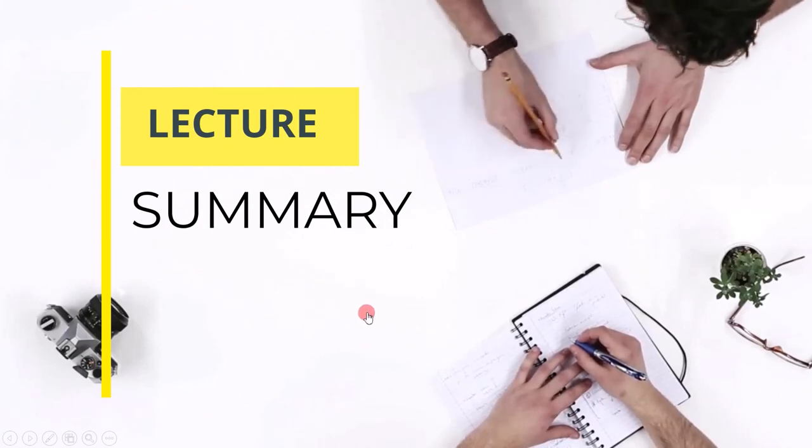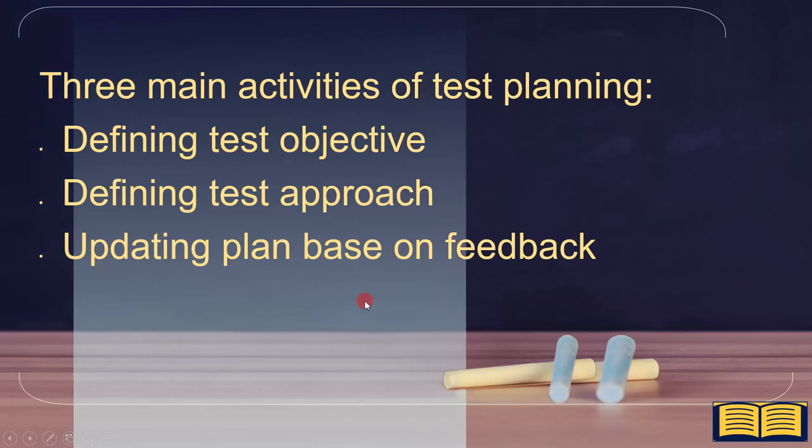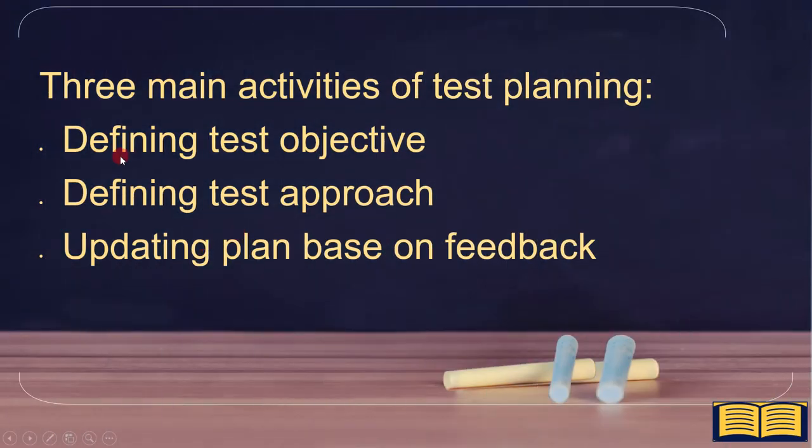Let's summarize the points. We covered three main activities of test planning: defining test objective, defining test approach, and updating plan based on feedback.